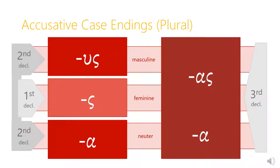In the accusative plural, the second declension masculine ending is -us, upsilon sigma. The first declension feminine accusative plural is just sigma, and the second declension neuter is alpha. So although the accusative singular endings were the same for the masculine and neuter second declension, in the plural they become different: -us for the masculine, -a alpha for the neuter. In the third declension, for masculine and feminine nouns, the ending is -us, and for neuter third declension nouns, the ending is just alpha, which is just like the accusative plural ending for second declension neuter nouns.